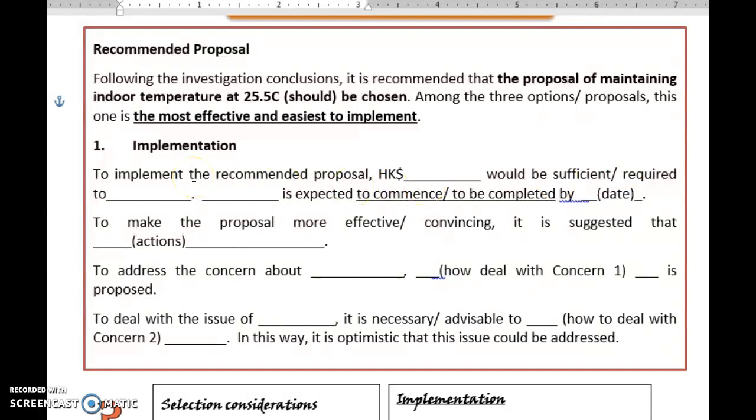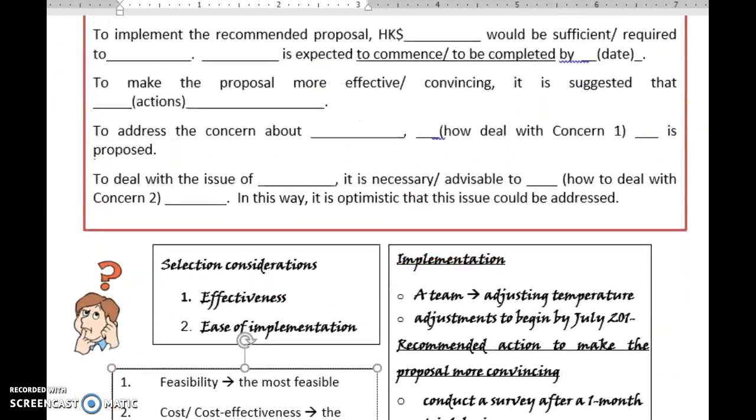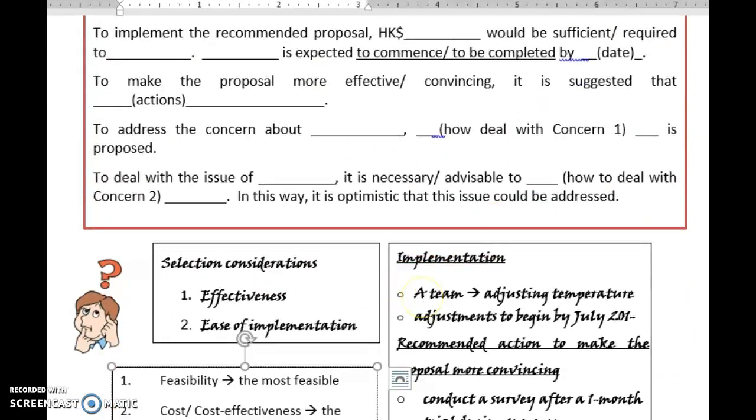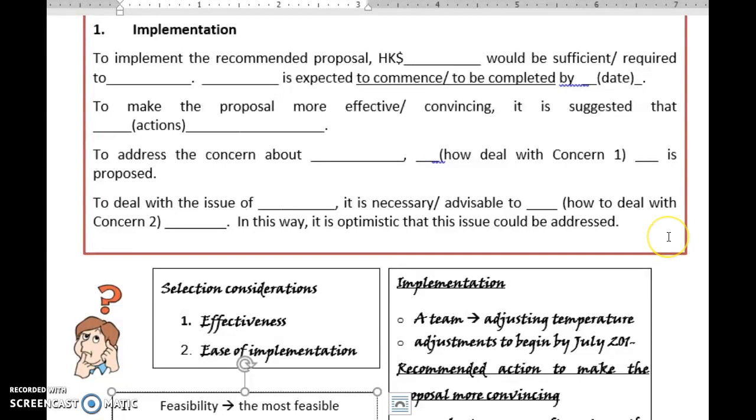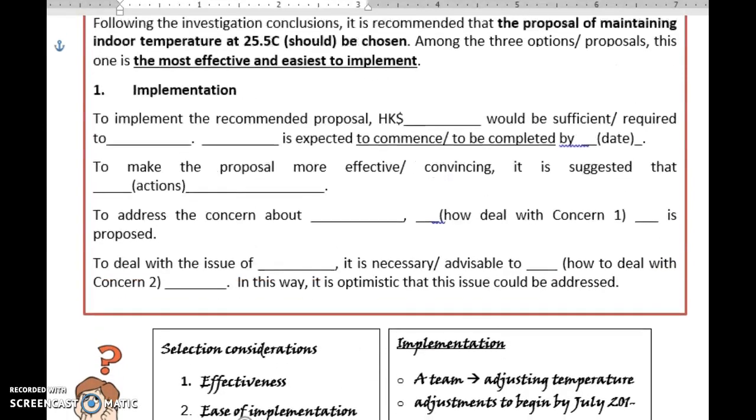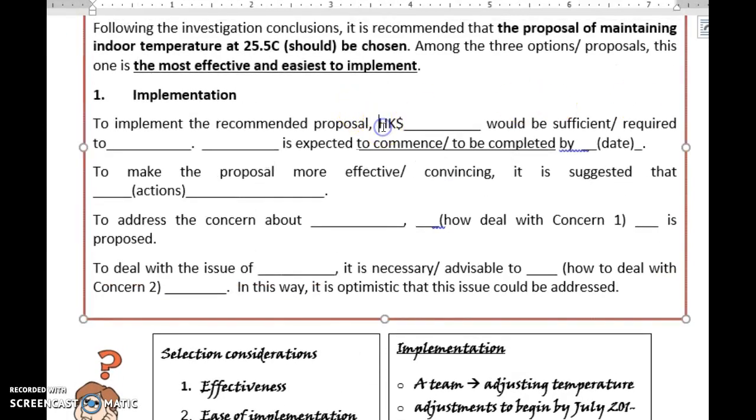Let's move on to talk about the implementation details. So the first paragraph of the implementation details is usually about budget. Sometimes it would be about manpower. So this time it's about manpower. A team adjusting temperature - here means a team is required to help to adjust the temperature to 25.5 degrees Celsius. So we put, to implement the recommended proposal, a team...